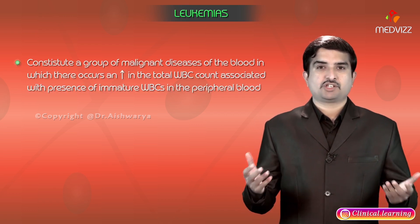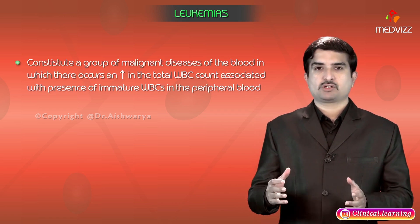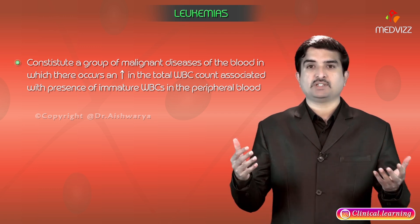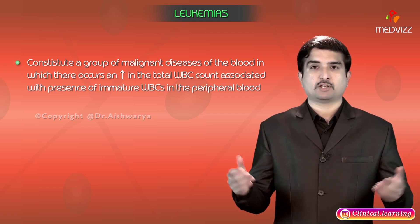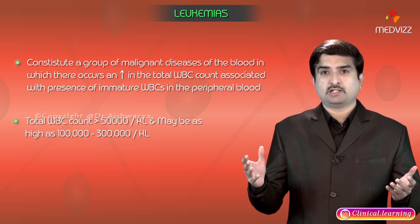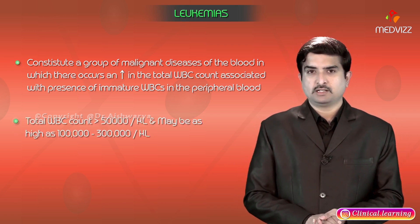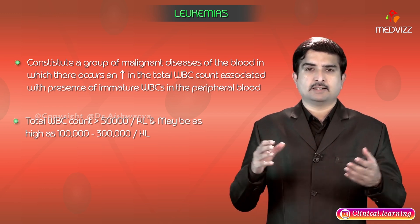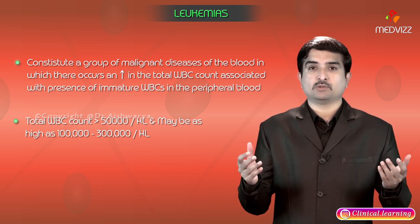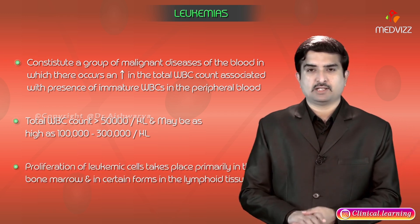Leukemias constitute a group of malignant diseases of the blood in which there is an increase in the total WBC count, associated with the presence of immature WBCs in the peripheral blood. The total WBC count is usually above 50,000 per microliter and may be as high as approximately 100,000 to 300,000 per microliter.